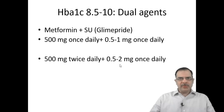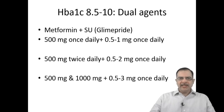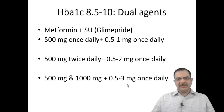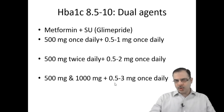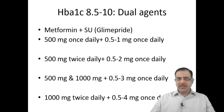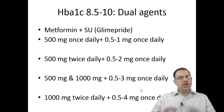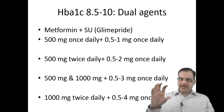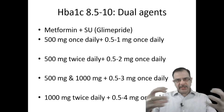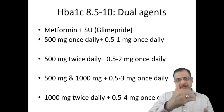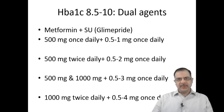Do not start Glimepiride in the evening or nighttime as nocturnal hypoglycemia is a concern. If glycemic control is still not achieved after four weeks, increase metformin to 500 mg morning and 1000 mg nighttime and you can go up to Glimepiride 3 mg. Depending on glycemic levels, you can keep Glimepiride as low as 0.5 mg. If sugars remain uncontrolled, make metformin 1000 mg twice a day and Glimepiride up to 4 mg once a day, or split as 2 mg before breakfast and 2 mg before dinner.